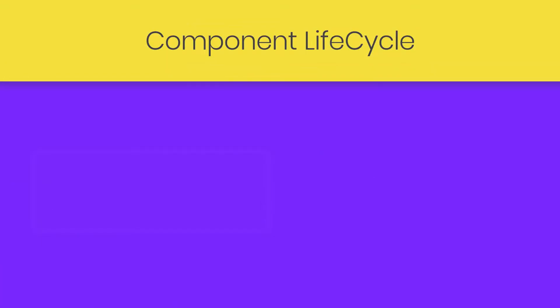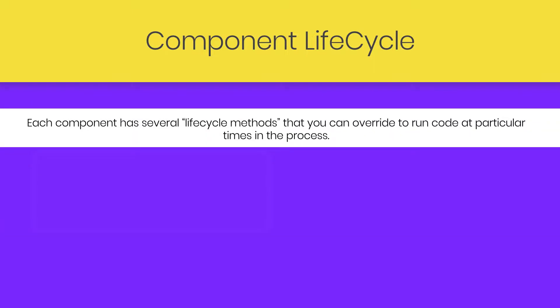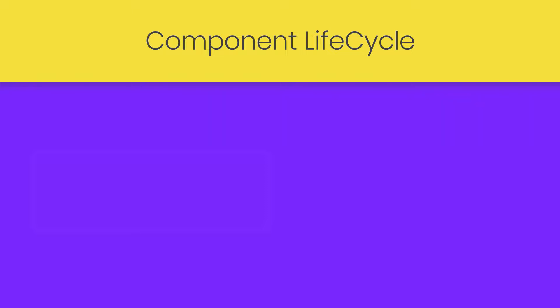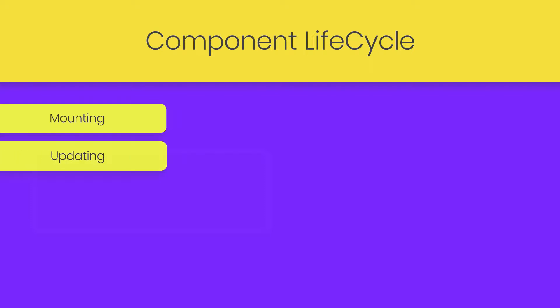From this lecture, we're going to understand the component lifecycle, or you can also call it the component API. React has a component lifecycle. Each component has several lifecycle methods that you can override to run code at a particular time in the process. When a component is mounted in the UI, React will first call the constructor and then call the render method. Each component has several lifecycle methods. There are three different phases React uses to create a component: mounting, updating, and unmounting.